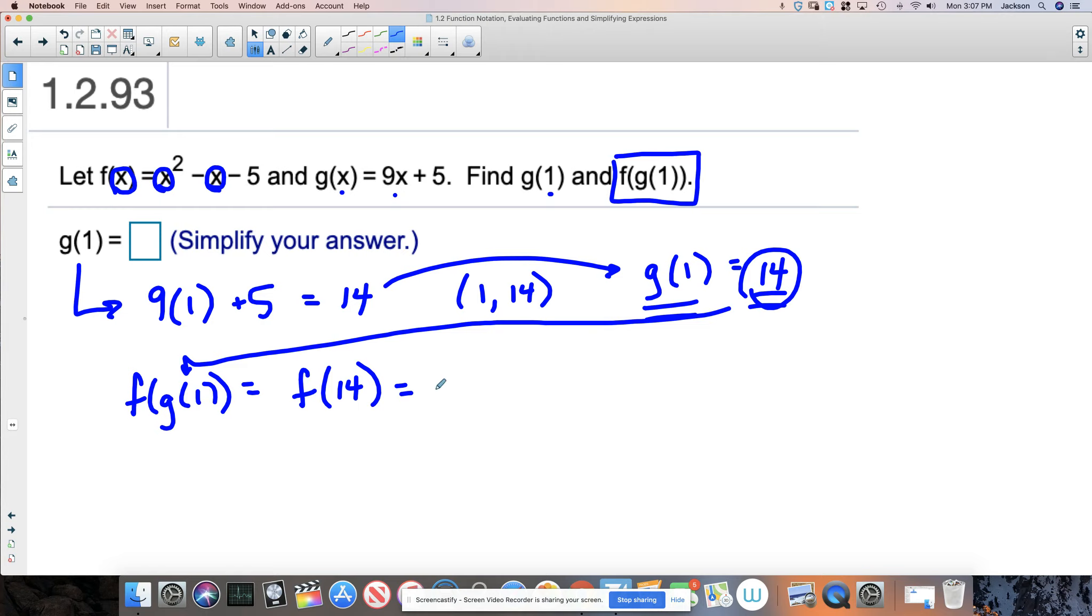So f of 14, now I'm putting the 14 in parentheses wherever the x was in this function. 14 squared, I'm doing this in my head, but I think it's 196 minus 14 minus 5. That's equal to 177, 182 minus 5. Yeah, right.